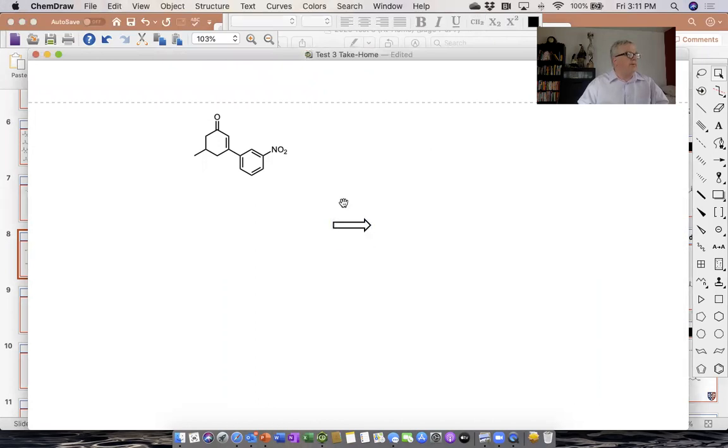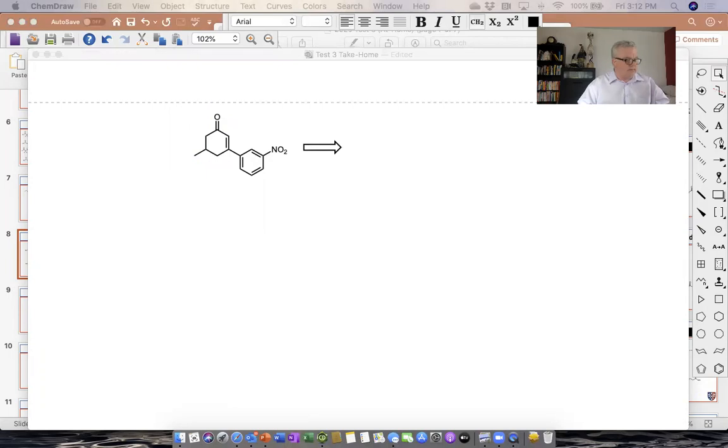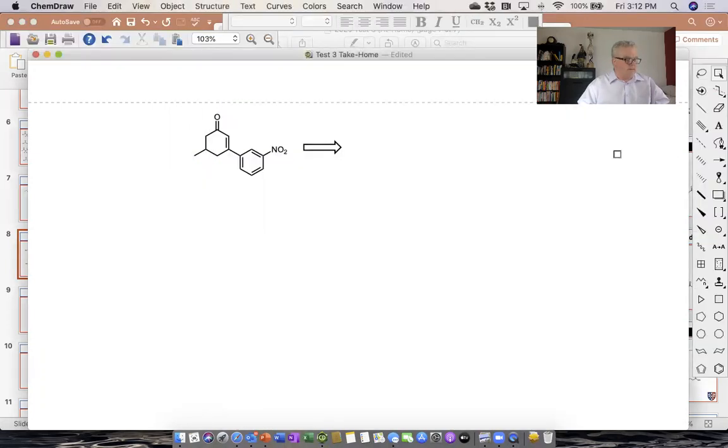What I was hoping people would notice after having done problem two, where they did a Robinson annulation, I was hoping people would notice that they have this six-membered ring. So if you notice that six-membered ring, you can think backwards and realize you can make this from these two reactions.